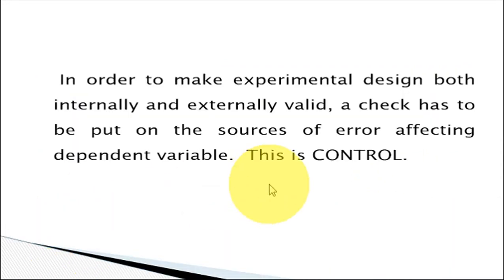What is control? In order to make experimental design both internally and externally valid, a check has to be put on the sources of error affecting the dependent variable. It is necessary to establish valid experimental research, and we have to control the sources of error as much as possible. In previous classes, we have already talked about the different sources of error which may affect internal validity and external validity.